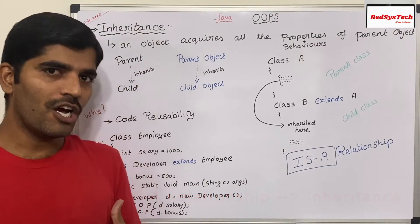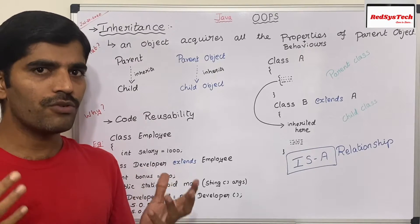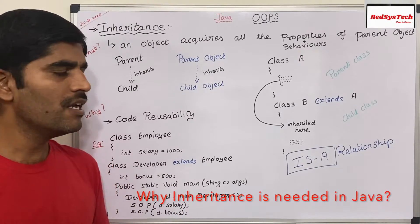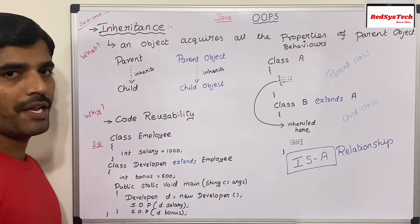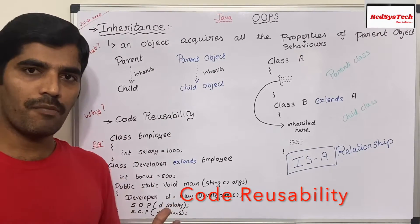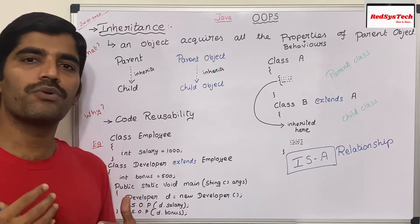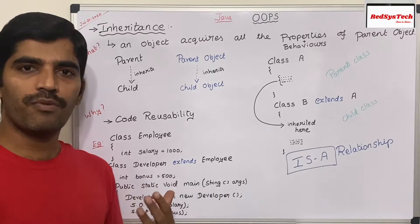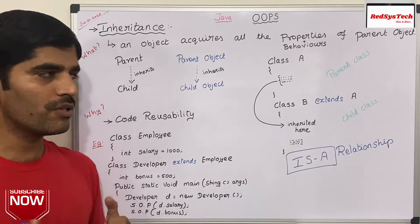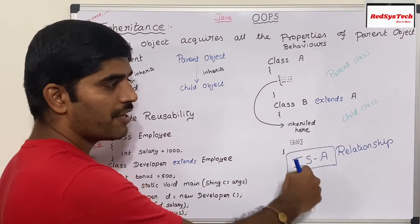Why do we need inheritance in Java? Why do we need to implement inheritance in object-oriented programming languages like C++ and Java? The reason is code reusability. Because let's say I'm developing a real-time application wherein I want to write some logic which I need to use in a lot of places. I don't want to write the same logic every time whenever I need it, so I can write it in one place and reuse it wherever I require.